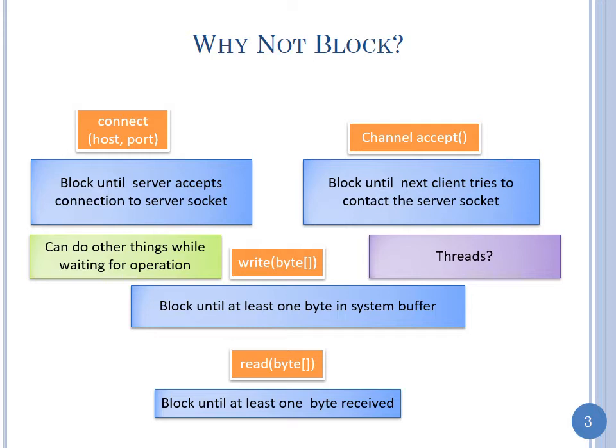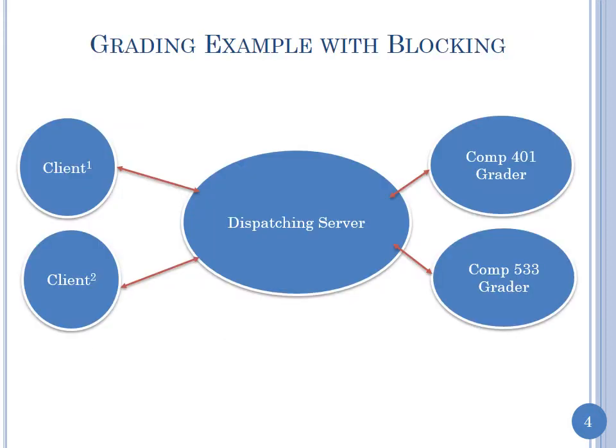We have threads, and Unix sockets had both blocking and non-blocking modes. Java decided to add a Java layer above sockets and said we don't need to worry about non-blocking, which is complicated to program — people have threads. That was the prevailing thought: if you have threads you don't need non-blocking. This was way back before the web really caught on.